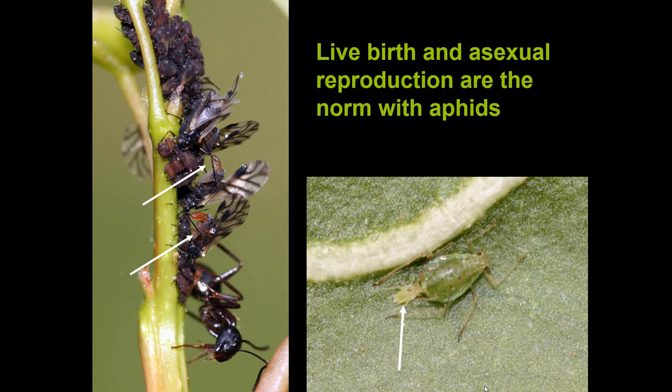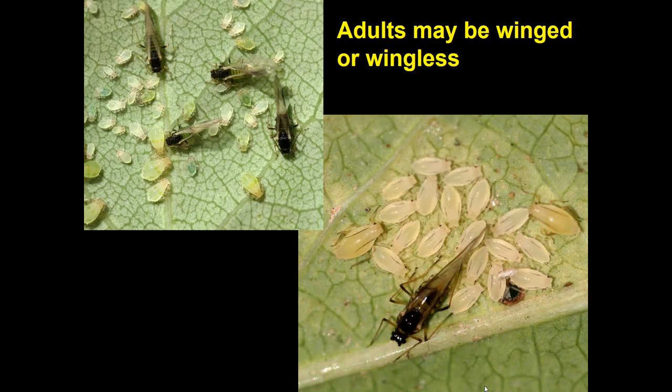Adult aphids may be winged or wingless, and this is not determined by genetics — they could be either a winged morph or a wingless morph. They tend to produce more winged stages if there's some reason to leave the plant: overcrowding, declining plant quality, or day length triggering winged forms. But if everything's going well, most will stay on the plant and be wingless. It's a risky operation for a winged aphid — they're essentially blind, can't smell, and aren't good flyers, so most fail to find a new plant. But enough succeed.